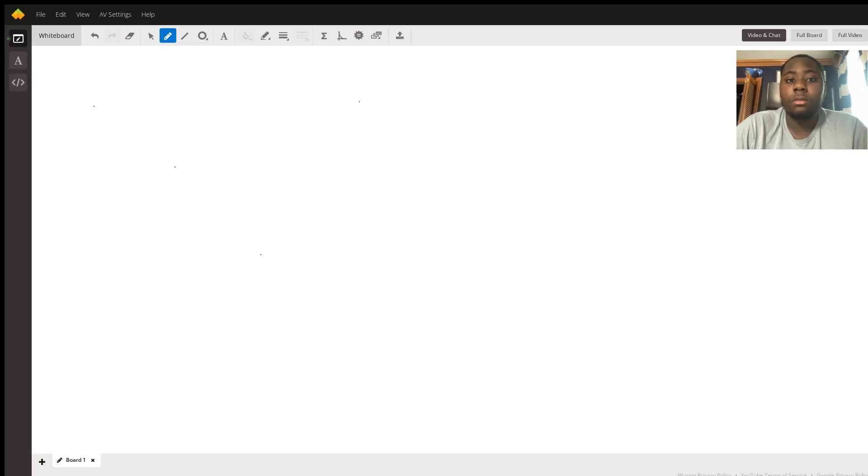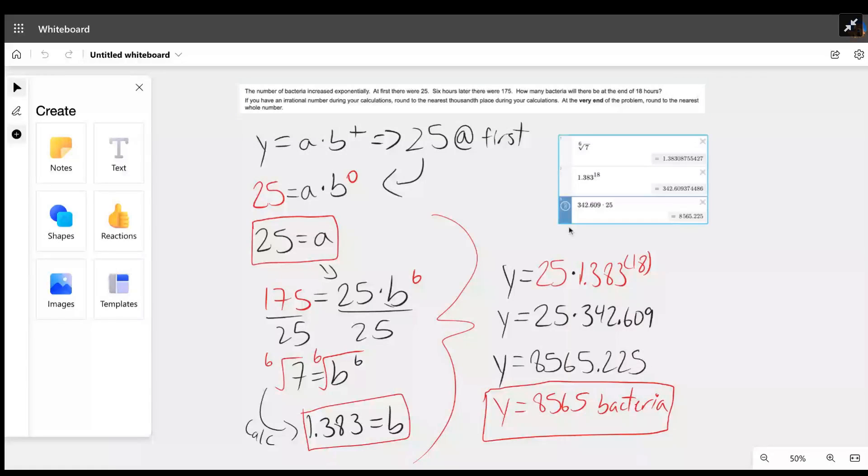Let me share my screen real quick and take you through this problem. Starting off, it says the number of bacteria increase exponentially, so we know the formula we need to use: y equals a times b to the power of t, which is the general equation for exponential functions.